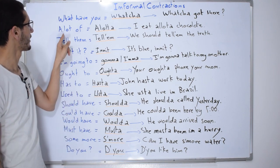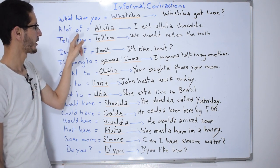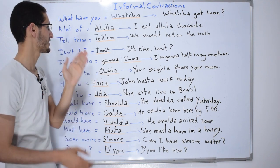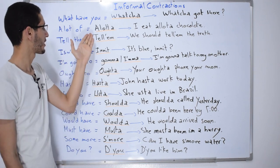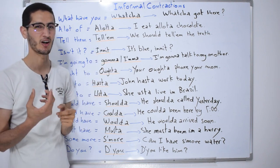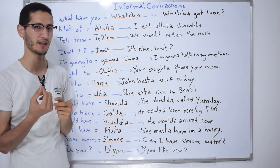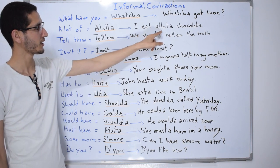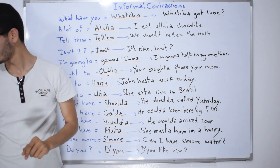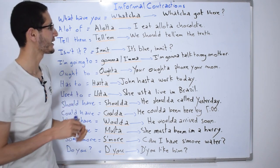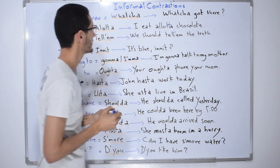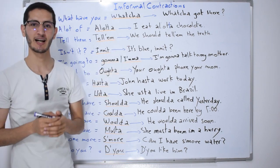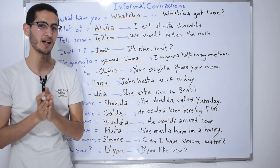The second contraction is 'a lot of.' Native speakers don't pronounce all the letters — 'a lot of' is squeezed together and becomes 'a lotta.' The double T sounds like a light R or a light D. For example: 'I eat a lotta chocolate.' It's a natural, fluid way native speakers pronounce this phrase.